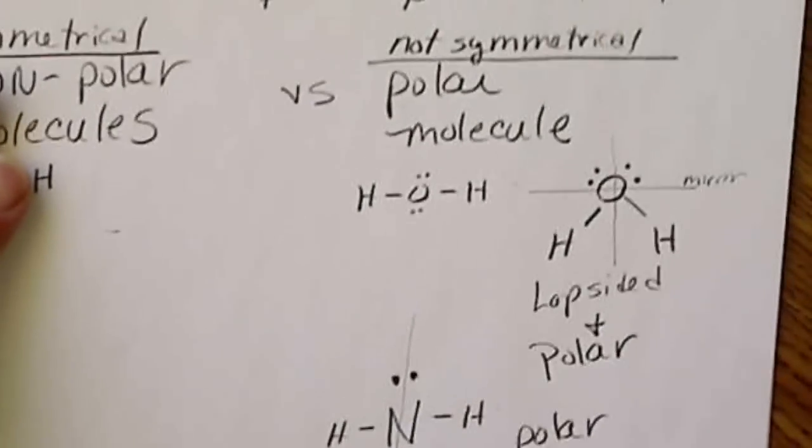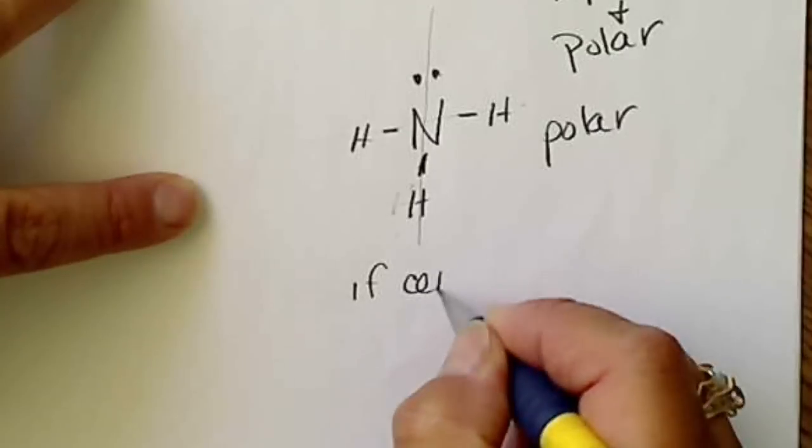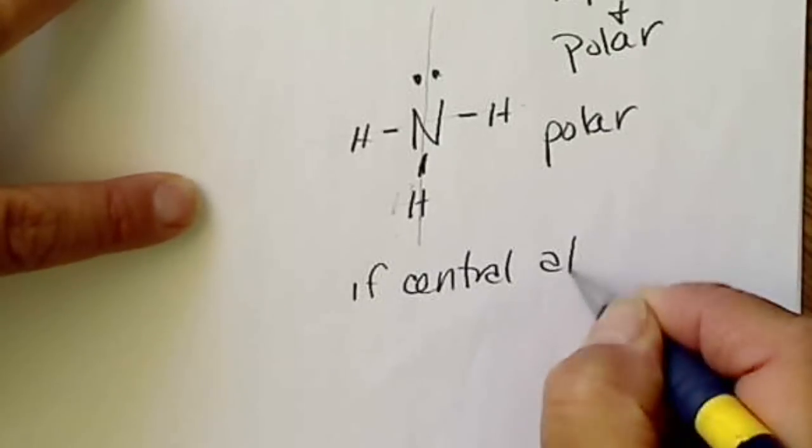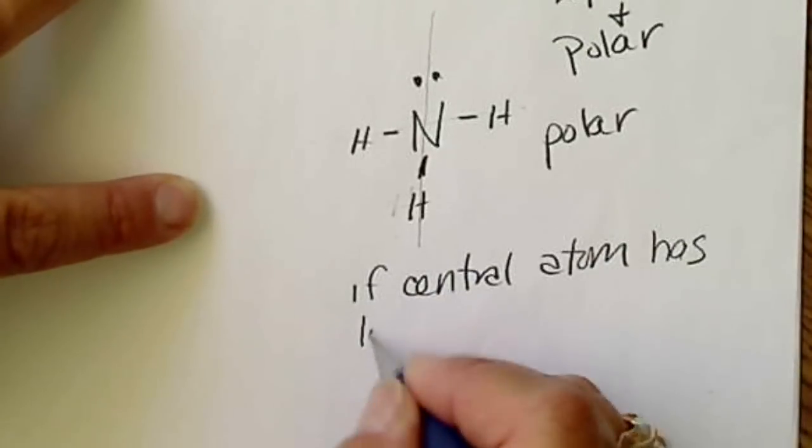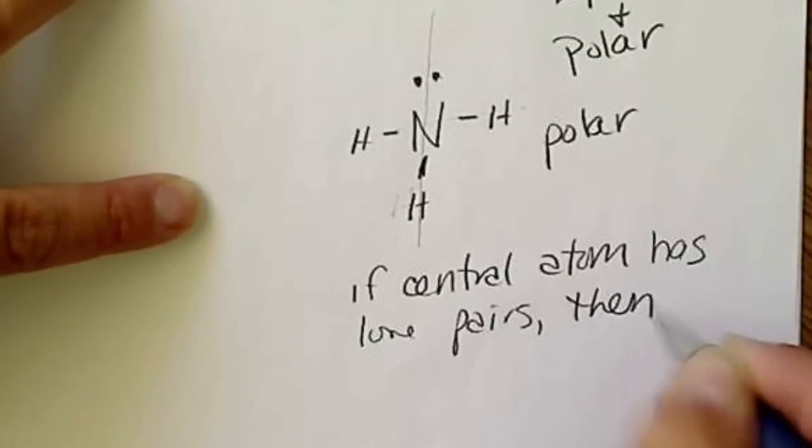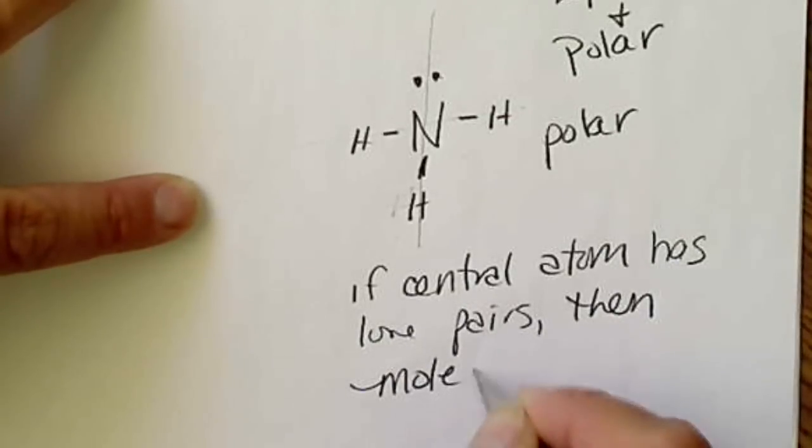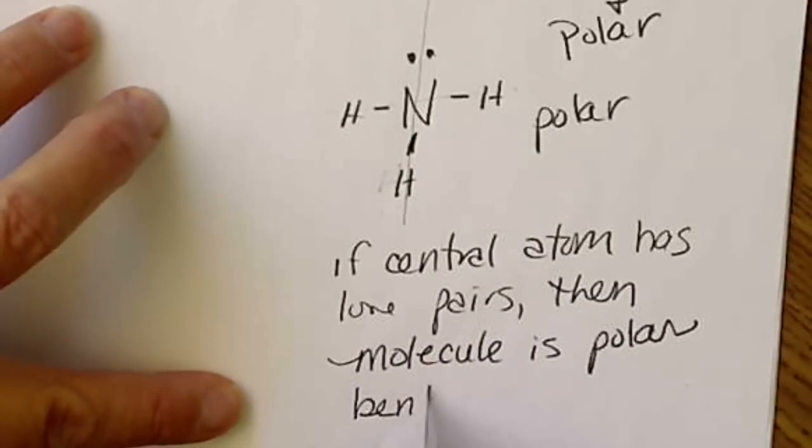This molecule is also polar. One rule that is always going to work is if the central atom has lone pairs, then the molecule is polar. That automatically means two shapes are always going to be polar: bent and the trigonal pyramidal shape.